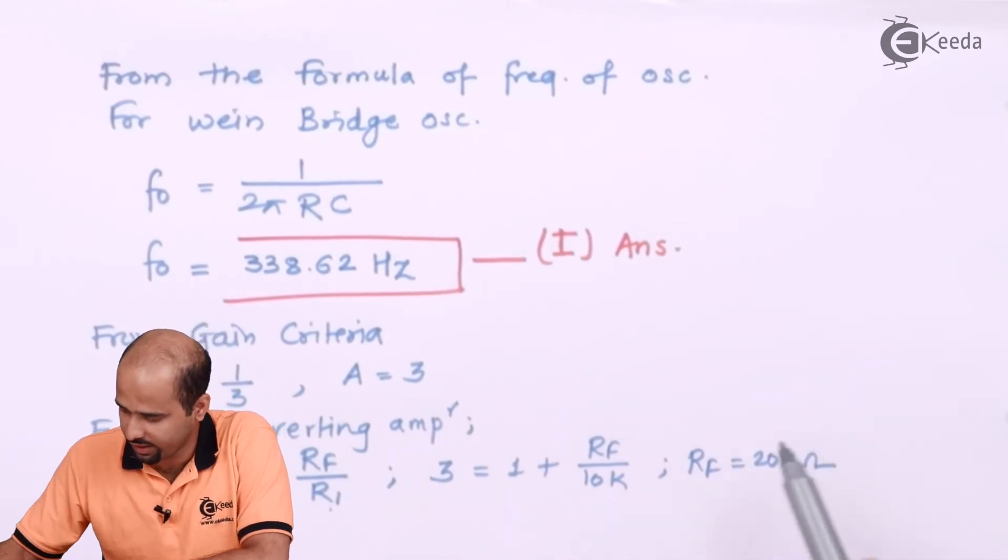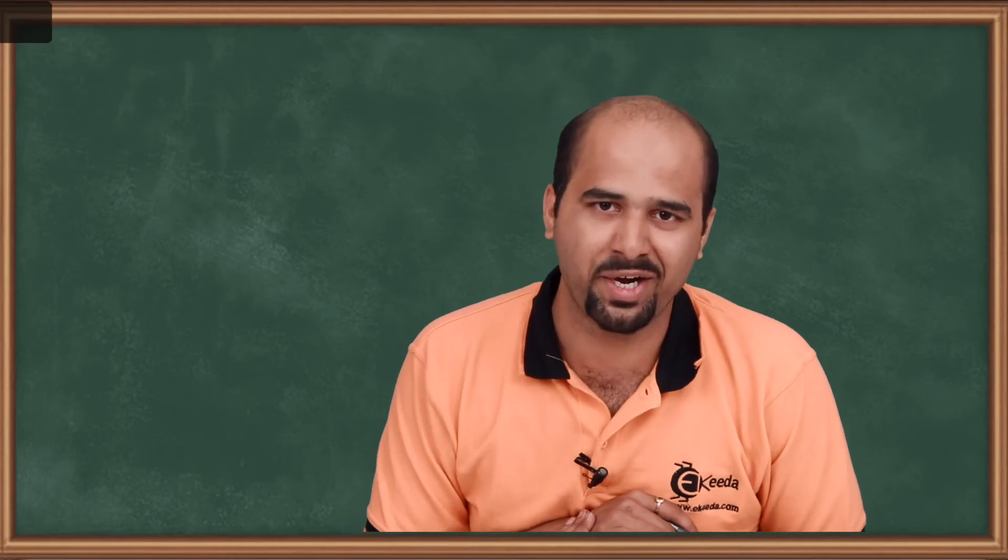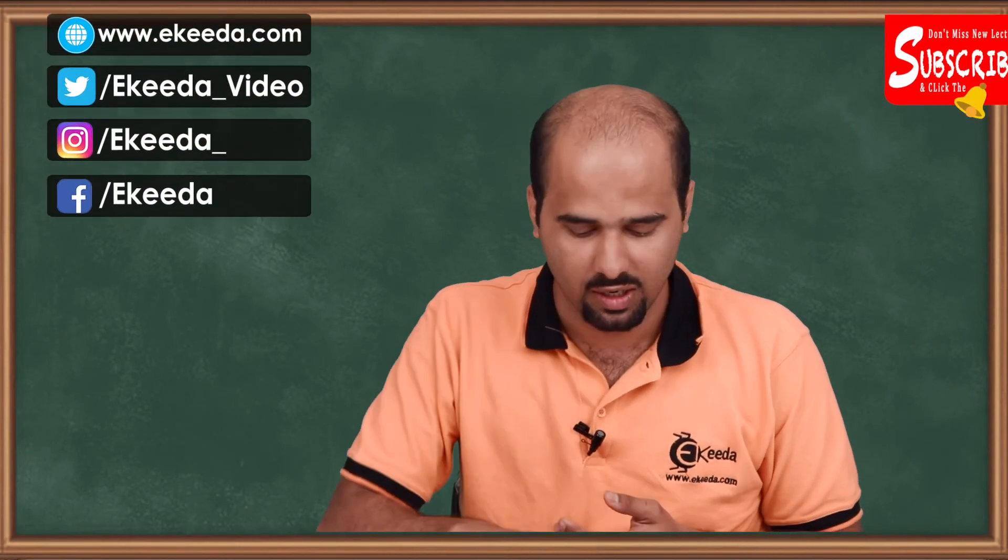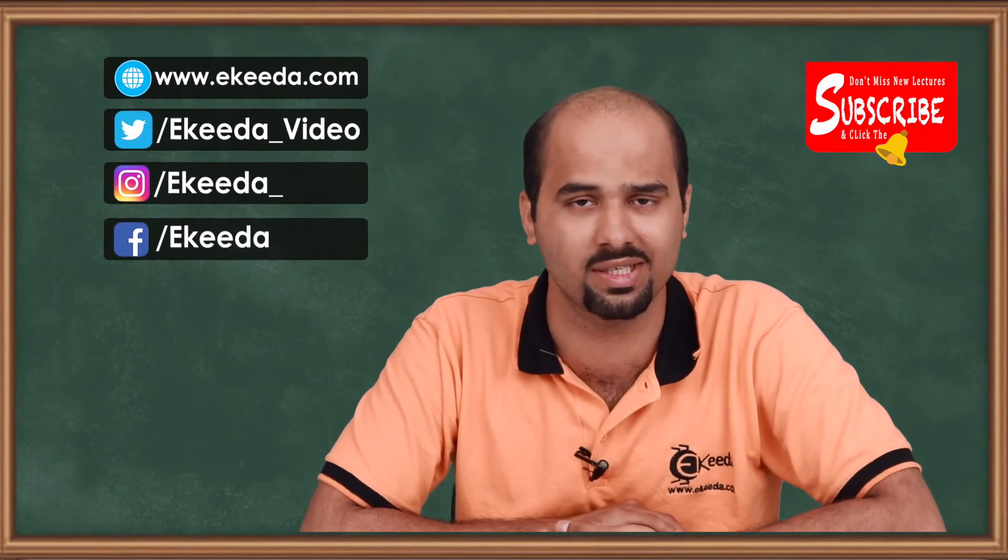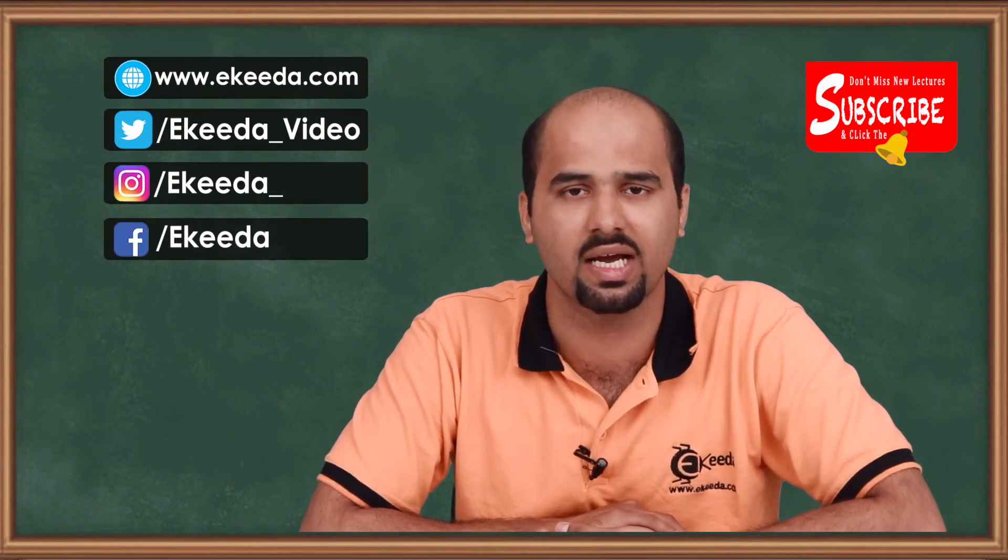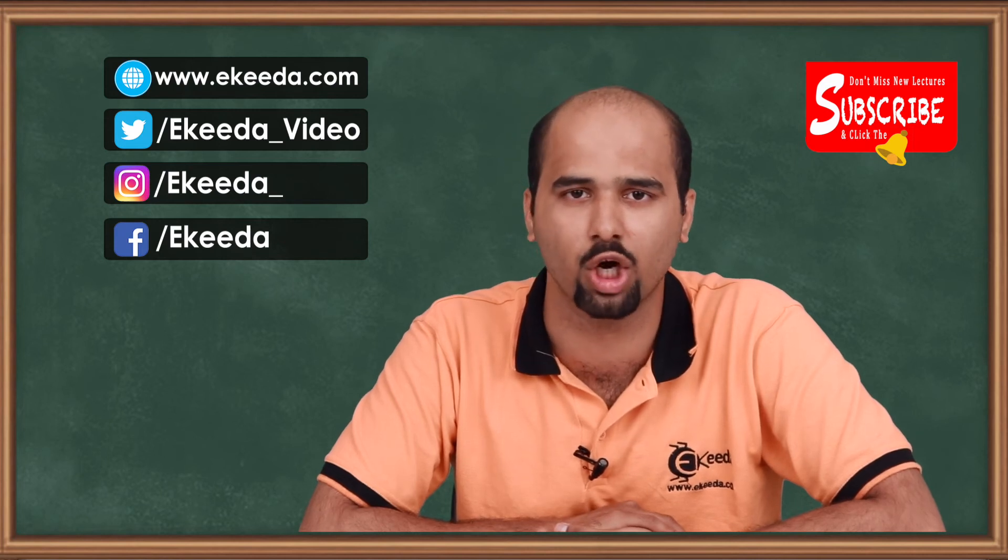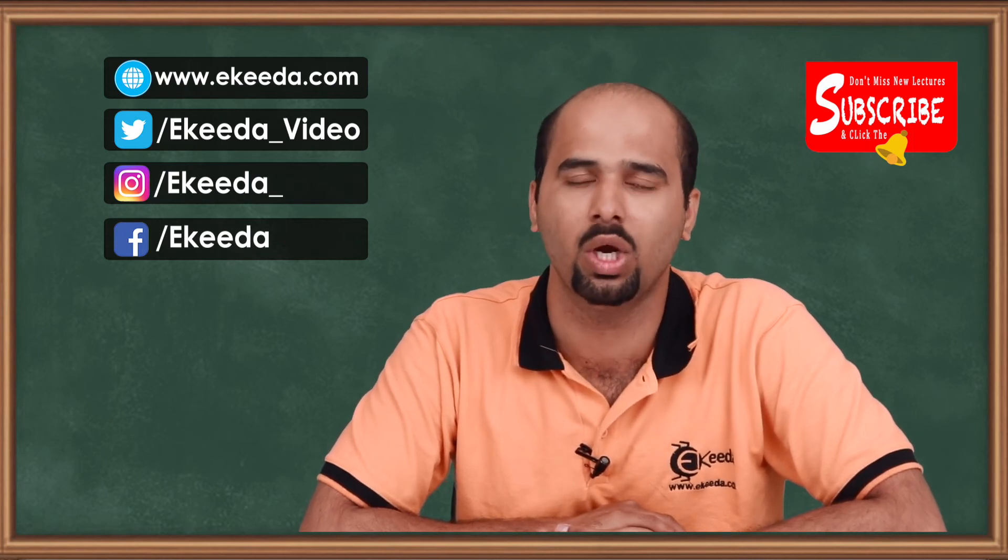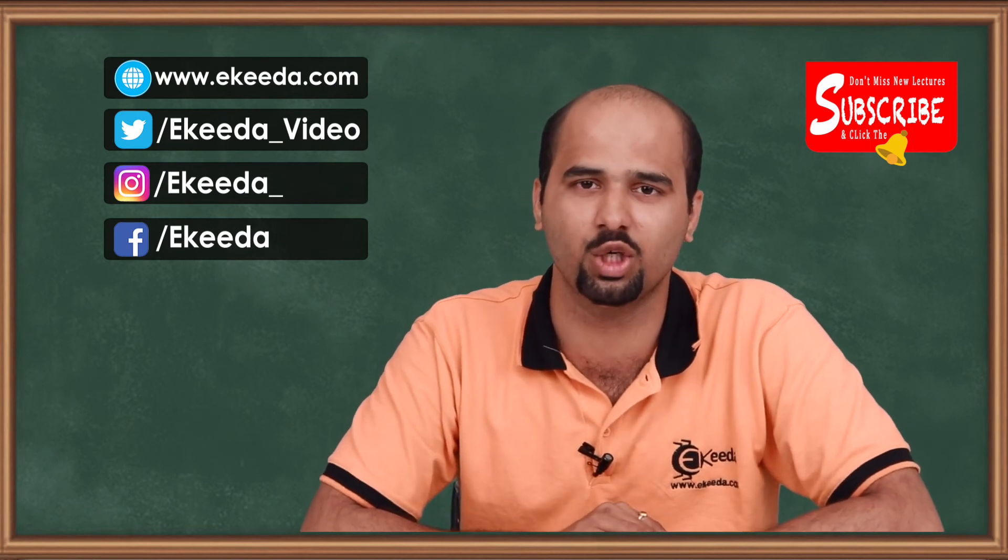This is nothing but the another finding that we are expecting from this particular numerical answer. We have got the answer as frequency of oscillation is 338 hertz and the gain is nothing but 3, from which we have got the value of RF is equal to 20 kilo ohm. So we will stop here for this particular video.